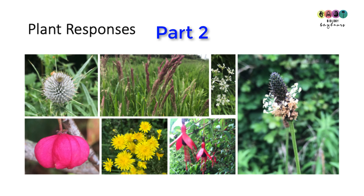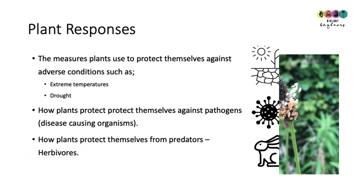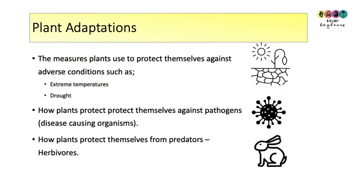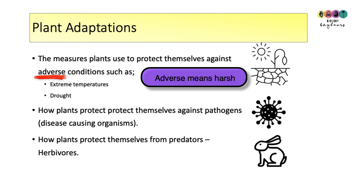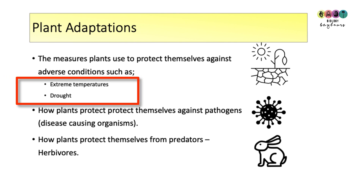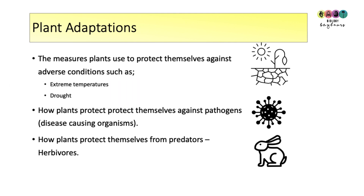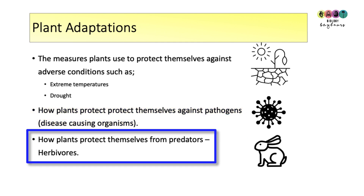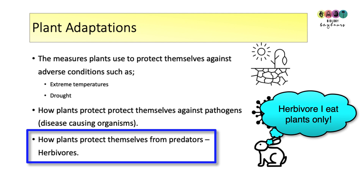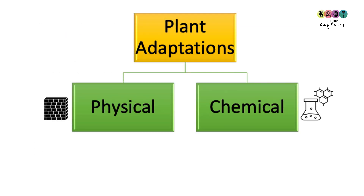This is plant responses part two, the final video. The second part of this chapter is all about plant adaptations — the measures that plants use to protect themselves against adverse conditions, meaning harsh conditions such as extreme temperatures or drought. Plant adaptations also cover protection against disease-causing pathogens and against herbivores that want to eat them. Plant adaptations are either physical or chemical.